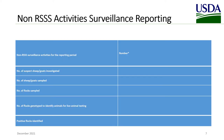Non-RSSS and RSSS activity surveillance reporting templates are available in your recipient's guide. Remember, only those activities that are funded through the cooperative agreement should be included in these reports. Reports are due quarterly as part of the cooperative agreement quarterly report. For non-RSSS activities, include the number of suspect sheep and goats investigated, the number of sheep or goats sampled, the number of flocks sampled, the number of flocks genotyped to identify animals for live animal testing, and the number of positive flocks identified.